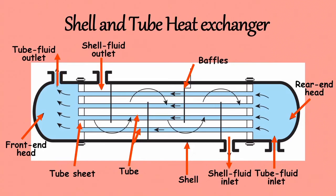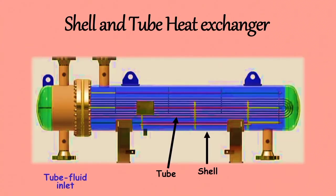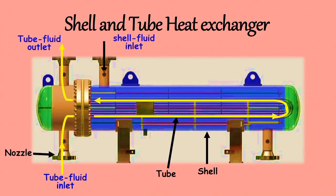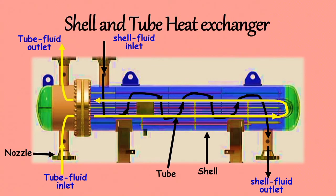The fluid flowing through the tubes is called the tube fluid or tube side fluid, whereas the fluid flowing outside the tube is called the shell fluid or shell side fluid. These fluids are in thermal contact but are physically separated by the metal wall of the tubes. Hence heat flows through the metal wall of the tubes from the hot fluid to the cold fluid.